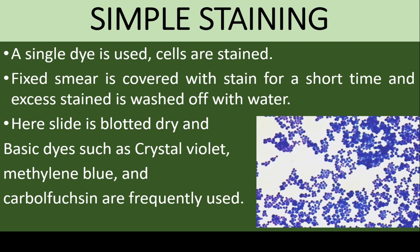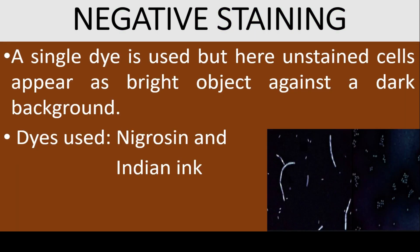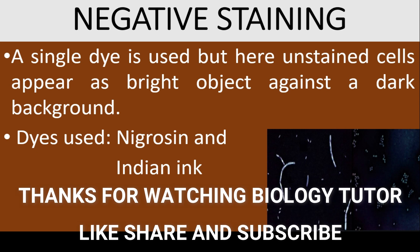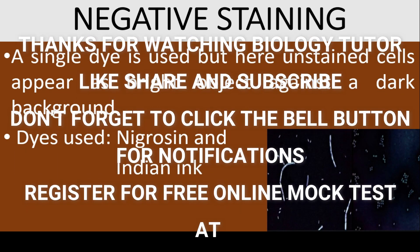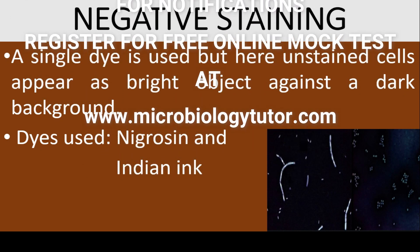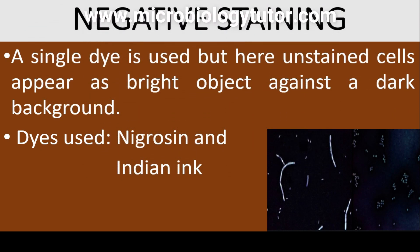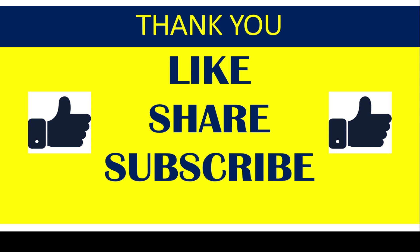In the image on the right side, you can see a simple stained slide. Negative staining is also a simple staining technique where only one dye is used, but here unstained cells appear as bright objects against a dark background — the background is dark and the cells appear bright. Nigrosin and Indian ink are used in negative staining. If you like this channel, please share and subscribe, and don't forget to click the bell button for notifications.